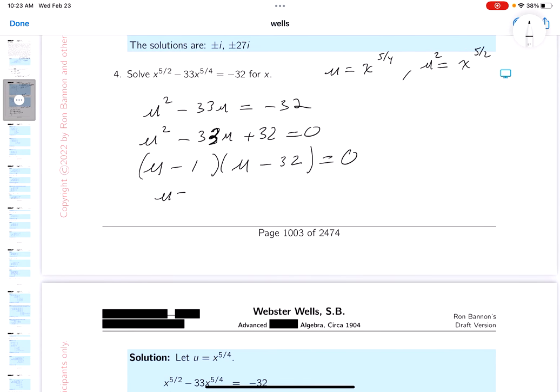So what do I know? I know u is 1 or u is 32. But I don't want u, I want x. So what's u? It's x to the 5/4. And what do you get there? 1. And then x to the 5/4 is equal to 32.